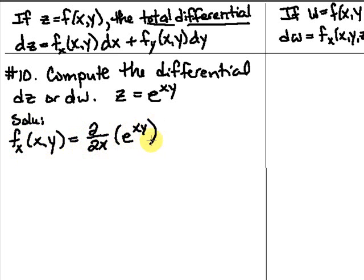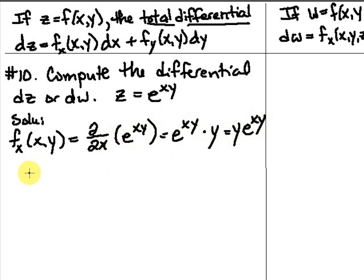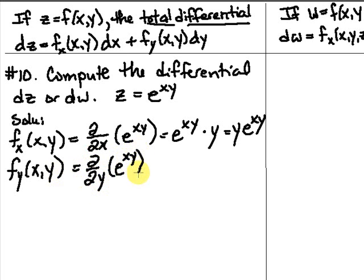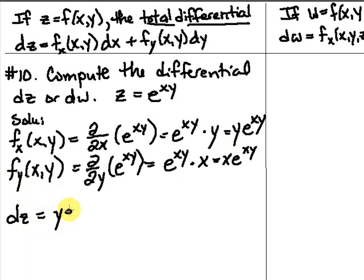For the partial derivative with respect to x: the derivative of e to a power is e to that power times the derivative of the exponent. Holding y as a constant, the partial with respect to x gives y times e to the xy. For the partial with respect to y, holding x constant, we get e to the xy times x, so x·e^(xy). The total differential is dz equals y·e^(xy) dx plus x·e^(xy) dy.